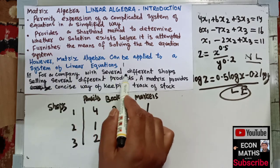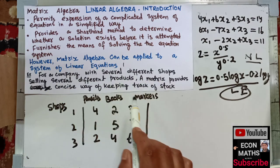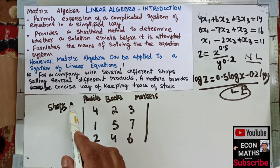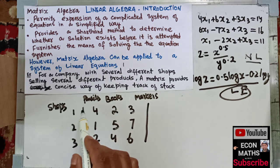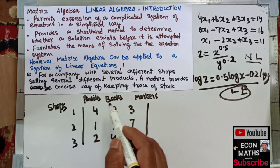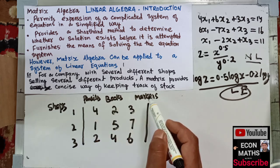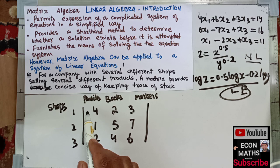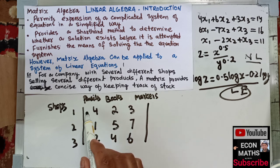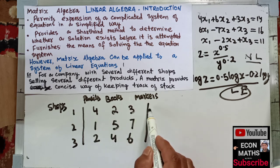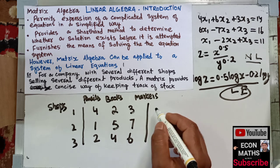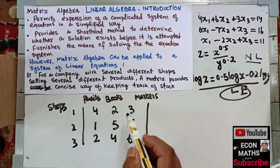Now let us have a real-life example. For a company with several different shops selling several different products, a matrix provides a concise way of keeping track of records. If a company has three shops — Shop 1, Shop 2, and Shop 3 — and each shop carries pencils, books, and markers, by reading across a row of the matrix the company can determine the level of stock of any of its shops.